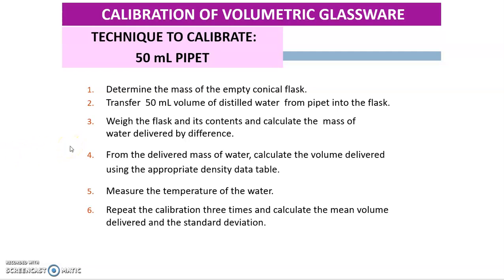First step: you need to determine the mass of an empty conical flask. Then, transfer 50 ml volume of distilled water from the 50 ml pipette into the flask. Weigh the flask and its content and calculate the mass of water delivered by difference. Again, we just need the mass of the distilled water delivered from the pipette.